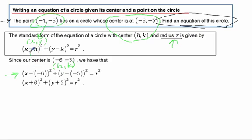Be very careful with those signs. It's got to be minus h, and h is a negative 6. So that's where this minus, minus the negative 6 comes from. And same with the minus, the negative 5. So this is what we have so far.